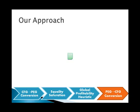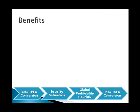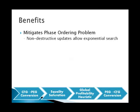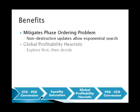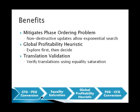Our approach has many benefits. It mitigates the phase ordering problem, since its non-destructive style allows us to efficiently explore an exponential number of orderings. We can use a global rather than local profitability heuristic, allowing us to explore our options first and then decide which is best. The same technique we use for performing optimization can also be used to perform translation validation by verifying the equivalence of input and output results of other optimizers.